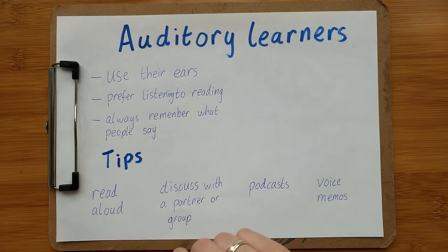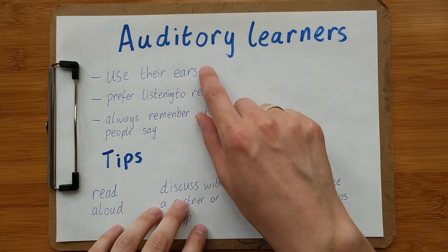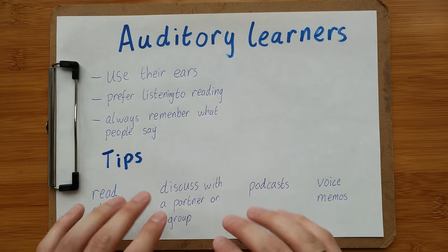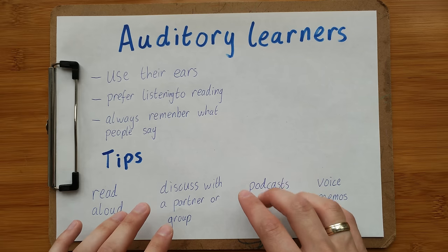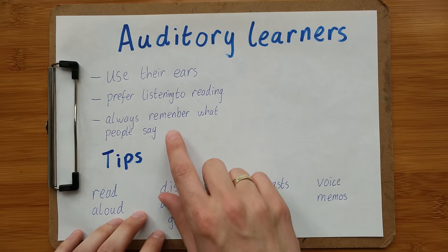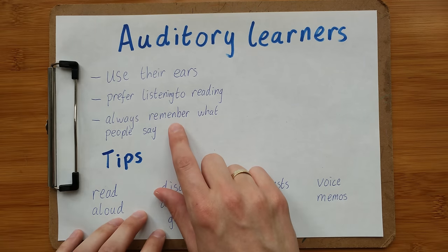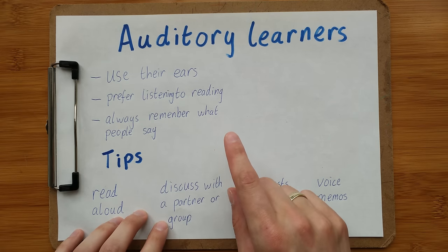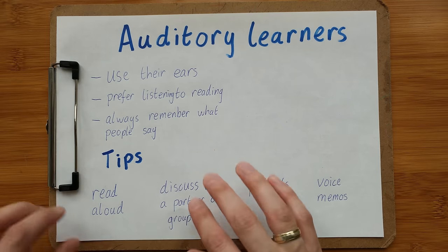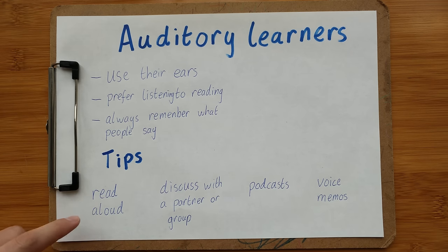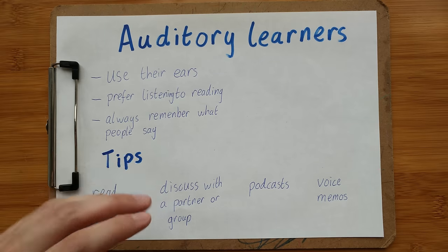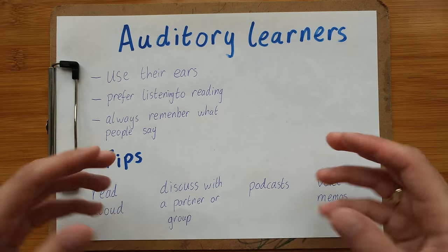The second style is auditory learners. Auditory learners like to use their ears — they love to listen to information rather than reading it. If you can always remember what somebody said, then you might be an auditory learner. Let's look at some tips for auditory learners. The first one is to read aloud — when you're reviewing your notes, say them out loud.